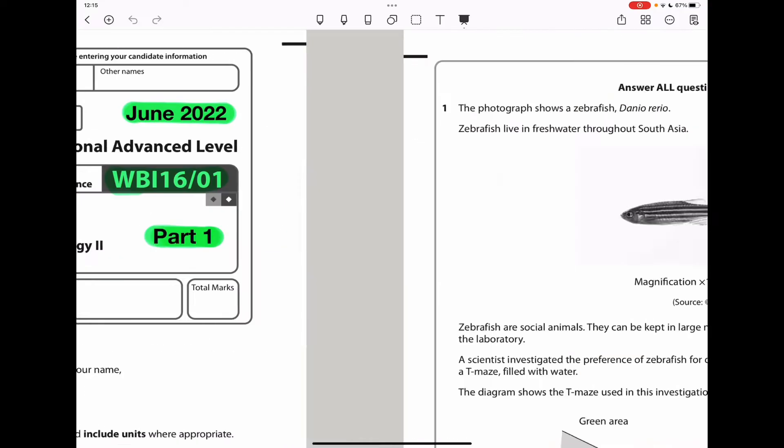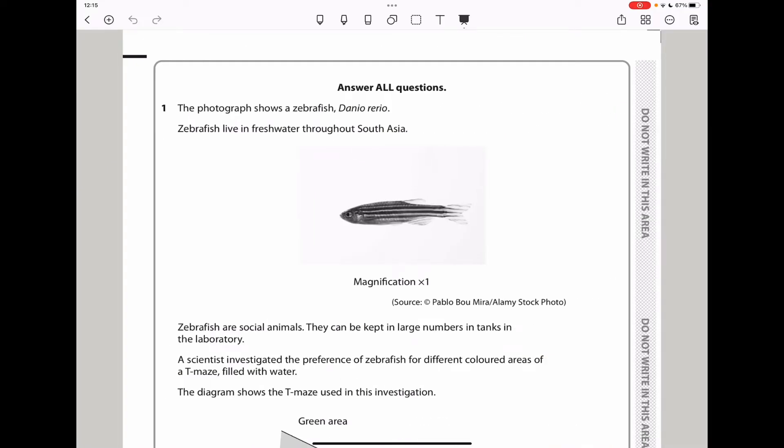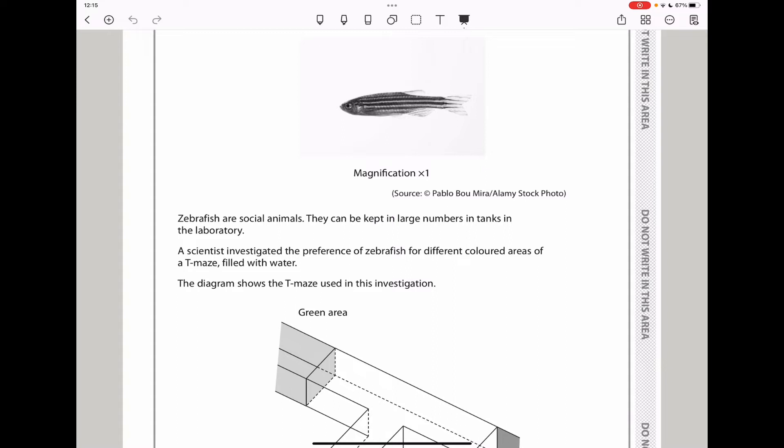Let's begin with Question 1. The photograph shows a zebrafish, Danio Rerio. Zebrafish live in freshwater throughout South Asia, and they've given you the magnification. Zebrafish are social animals. They can be kept in large numbers in tanks in the laboratory. A scientist investigated the preference of zebrafish for different colored areas of a T-maze filled with water.